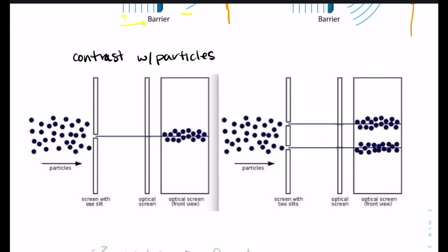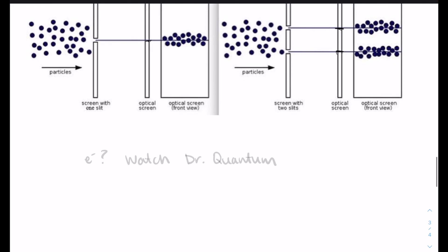So we're going to contrast this with what would happen with particles. Not a trick question. If you have particles and you shoot them all at a screen with one slit, you will just see one peak directly across from that slit where the particles went through and then hit the detector screen. If you put particles through a screen with two slits, you would see two peaks. It's a particle. Imagine tennis balls shooting through a barrier and then hitting a wall. You are only going to see a signal directly across from the opening.